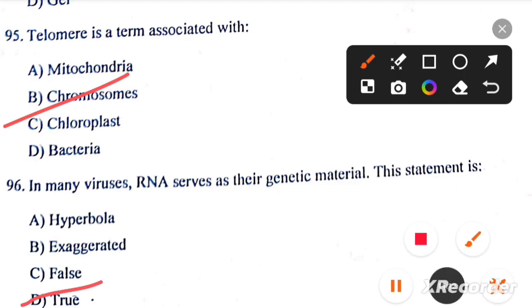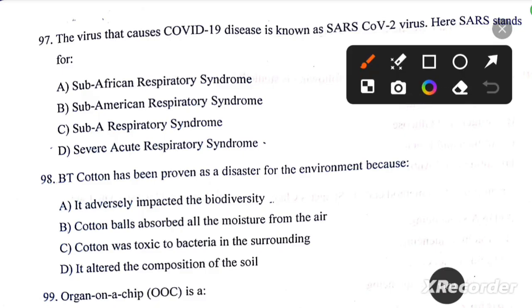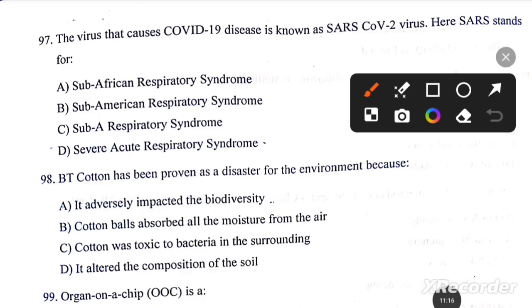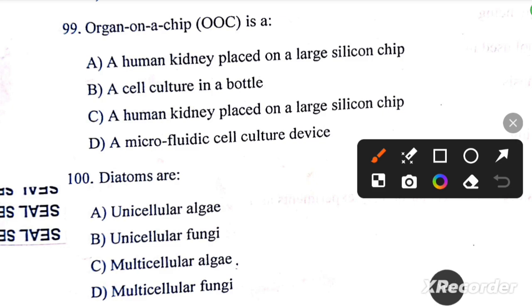In many viruses, RNA serves as the genetic material. This statement is true. The virus that causes COVID-19 disease is known as SARS-CoV-2 virus. Here SARS stands for severe acute respiratory syndrome. Bt cotton has been proven as a disaster for the environment because it adversely impacted the biodiversity. Question number 99: organ-on-a-chip (OOC) is a microfluidic cell culture device. Diatoms are unicellular algae.